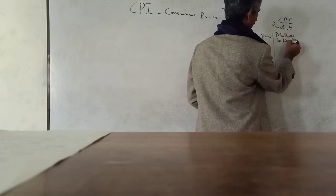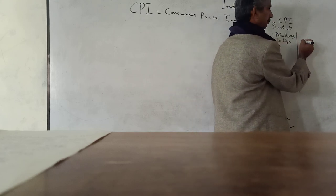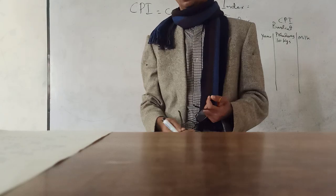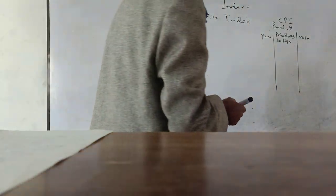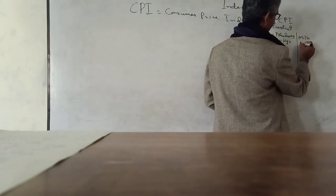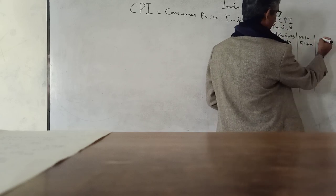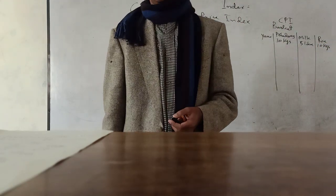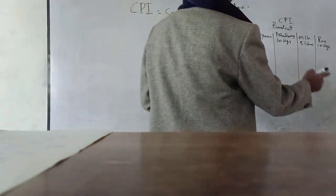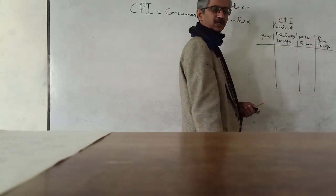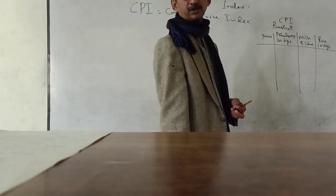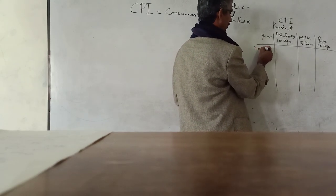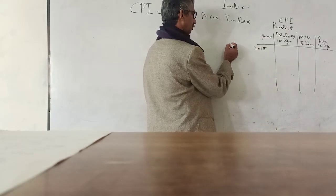In our example table, the items are potatoes — 10 kg — milk — 5 litres — and rice — 18 kg. These are the items which the person is purchasing. Usually our basket remains the same for longer time periods, for different years. We start from 2015, which is also our base year.